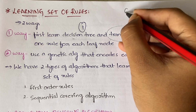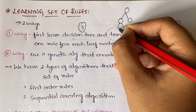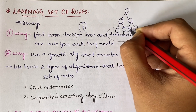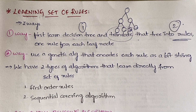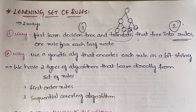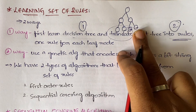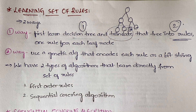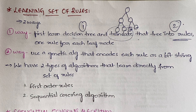For each and every leaf node you need to define a rule. Leaf nodes are the last-level nodes which do not have further children. So for each leaf node you define one rule — for this decision tree, you'll get four rules.